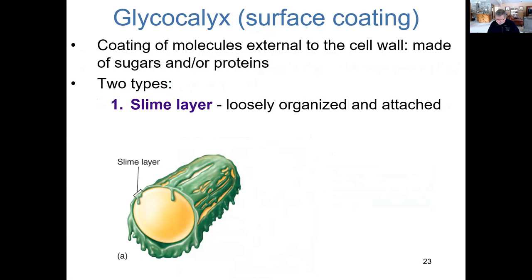Another external component found in many bacteria is the S-layer. Please read the section on bacterial surface coatings, the S-layer, and glycocalyx. I want to talk about the glycocalyx, which is found internal to the S-layer.